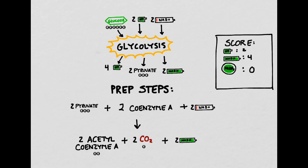At the end of these first two steps — glycolysis and the prep steps — we've created two molecules of ATP, four molecules of NADH, and zero molecules of FADH2, which we'll see in a little bit. At this point, the process will move out of the cytoplasm of the cell and into the mitochondria.